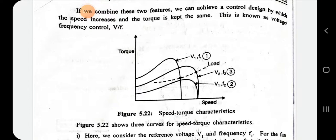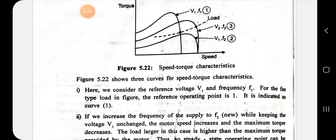To summarize the two features: N = 120f/P, so if frequency increases, speed increases but torque decreases. And T ∝ V², so if voltage increases, torque increases. By combining these two features, we achieve controlled torque characteristics of the three-phase induction motor.